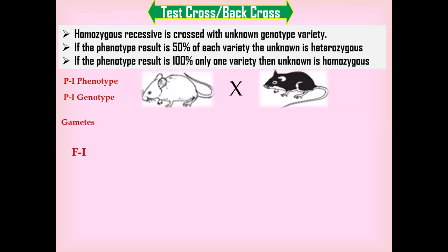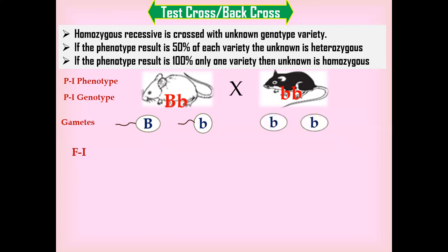To conduct this cross, we take parent one with the dominant trait — white color — while the homozygous recessive variety has lowercase b, lowercase b — black color. Suppose the unknown genotype is heterozygous; it will produce two different types of sperm, one with a capital B and one with a lowercase b, while the homozygous recessive produces one type of egg with a lowercase b.